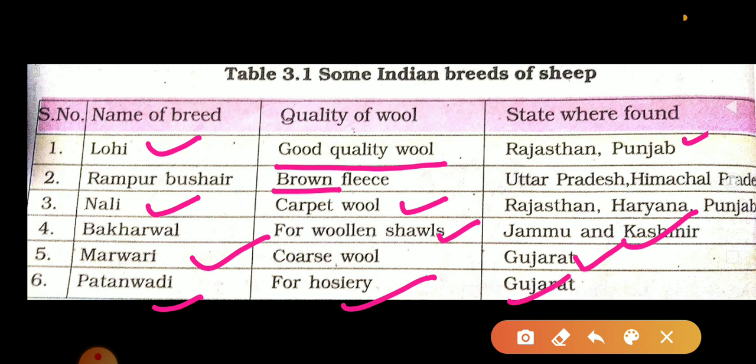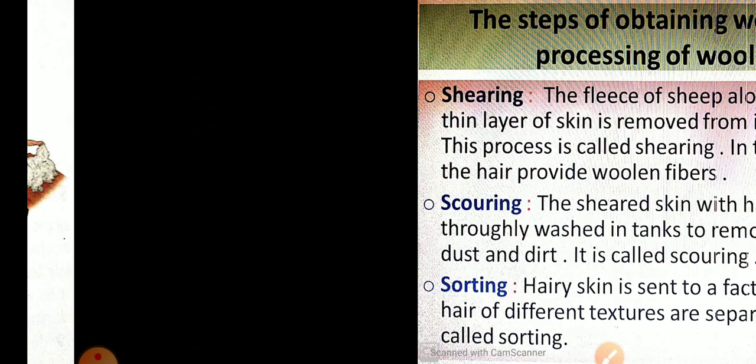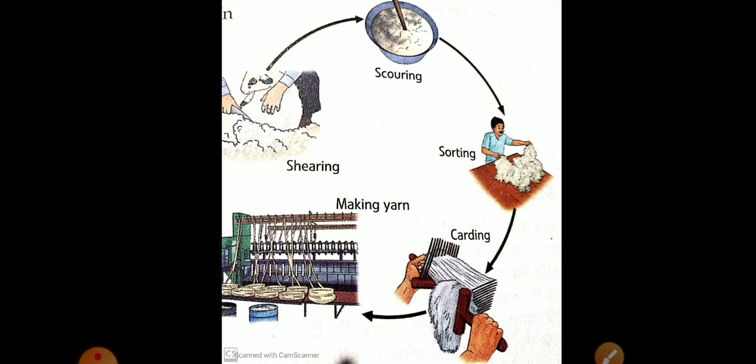Now, processing of wool. The steps of obtaining wool. This is a diagram which is showing the steps which are involved in the processing of wool. The first step is shearing.